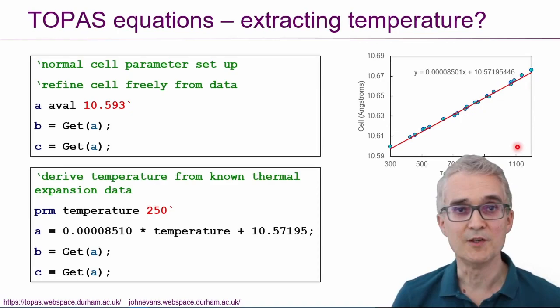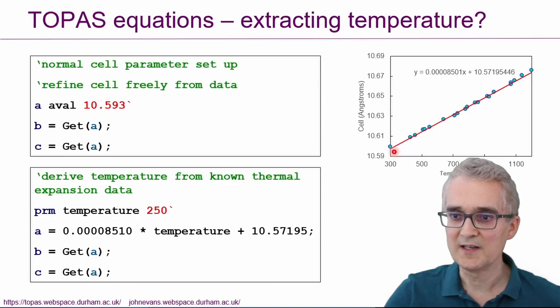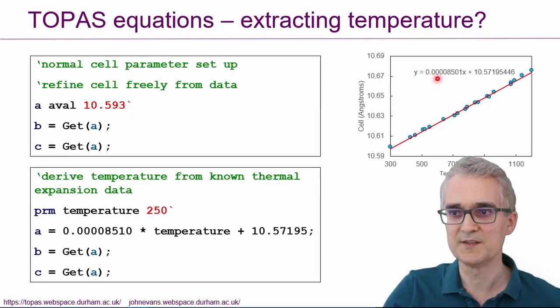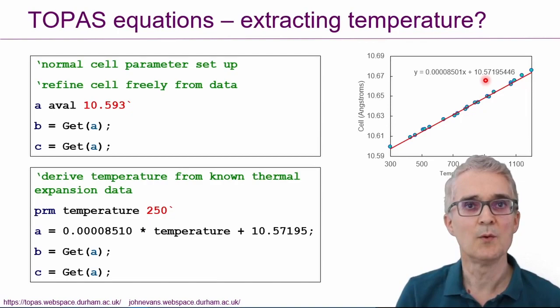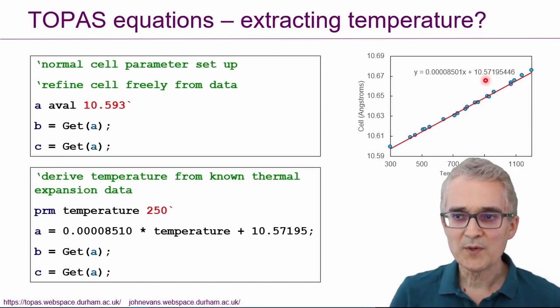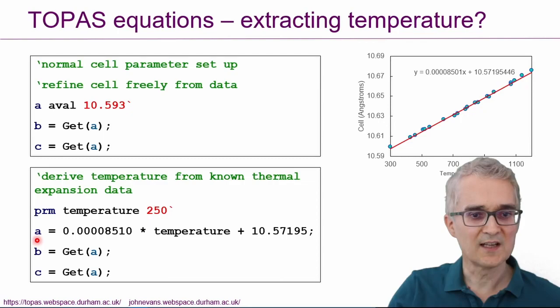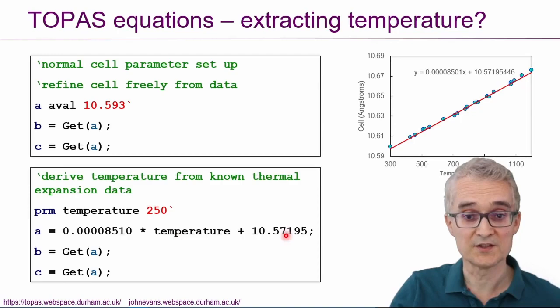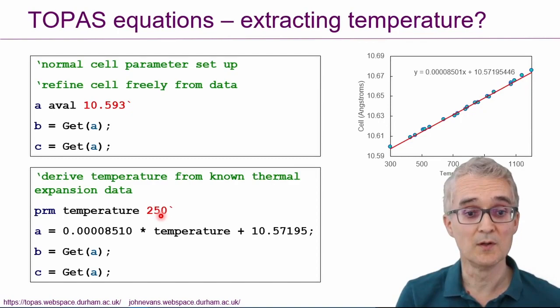In TOPAS, you can actually go a stage further and you can actually set the temperature up so it's a refinable parameter. If we take the data from the literature and over a small temperature range, we can approximate the thermal expansion by a simple linear equation. Here's the equation on the screen here. The cell parameter is something times the temperature plus a constant. Now in reality, over a wider temperature range, we have to use a slightly more complicated function, but this is good enough for this video. And then what we can actually say in TOPAS is we could define this parameter called the temperature. And we can say that the cell parameter should be given by something times temperature plus the constant. And if things are set up correctly, the temperature becomes a Rietveld refinable quantity.